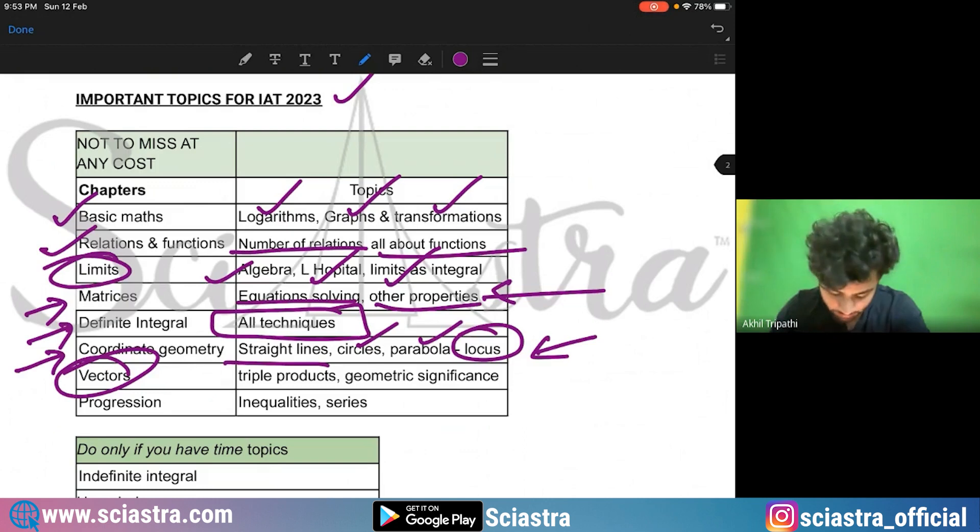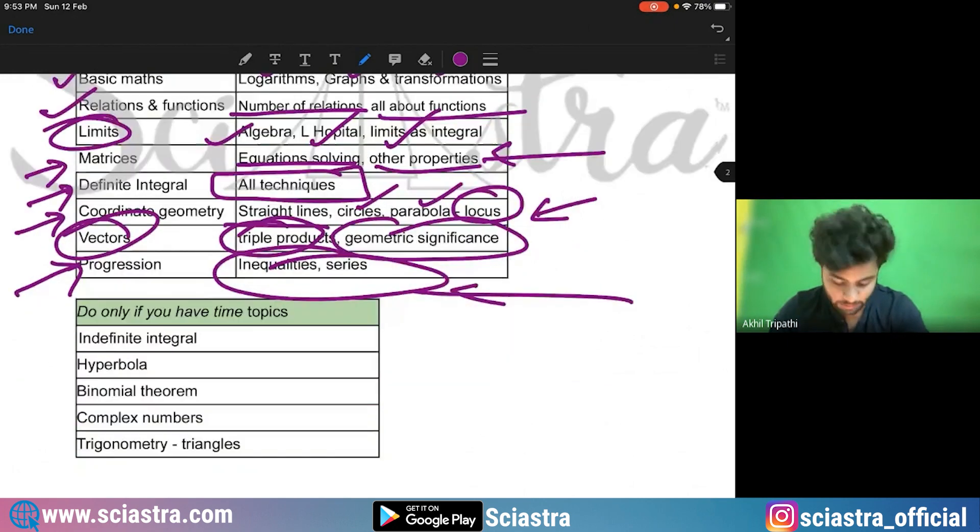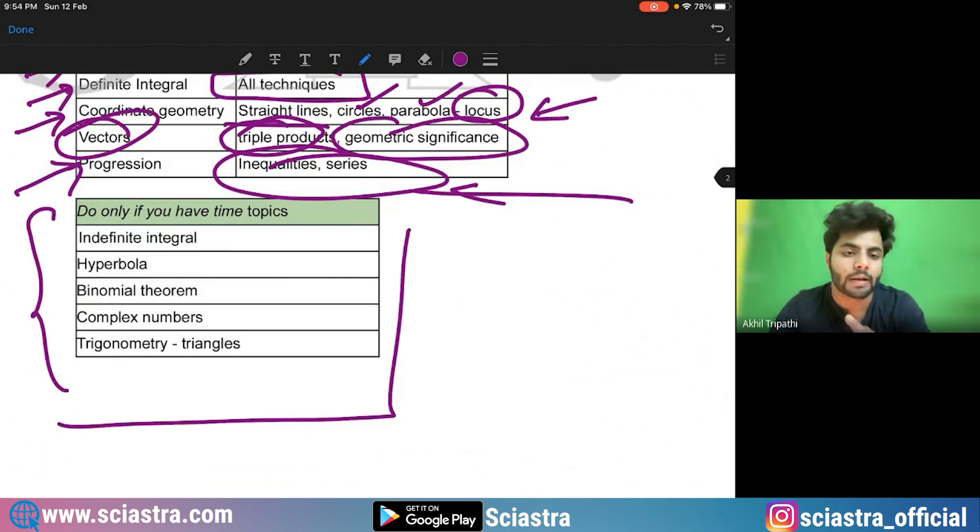Vectors, the important topics are vector triple product and geometric significance of the vectors. Coming to progressions, so inequalities and series, arithmetic progression, geometric progression, and inequalities. Coming to the chapters which are less important, question might come from here, but these are less important and less probable.